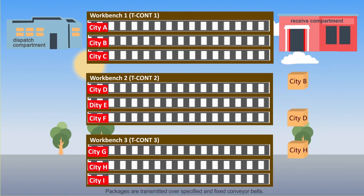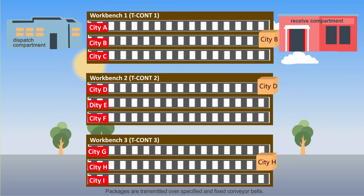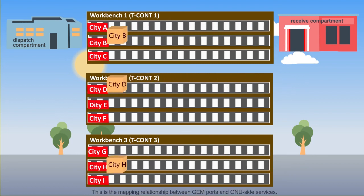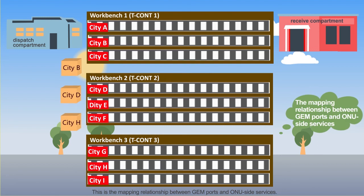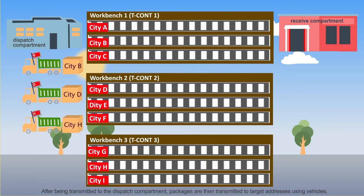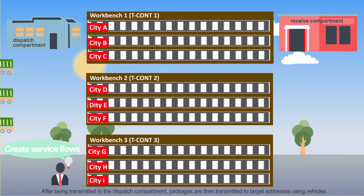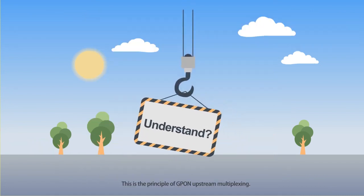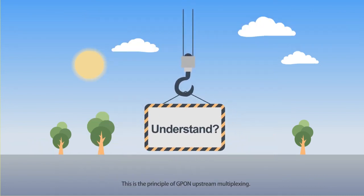Packages are transmitted over specified and fixed conveyor belts. This is the mapping relationship between GenePorts and ONU site services. After being transmitted to the dispatched compartment, packages are then transmitted to target addresses using vehicles. This is the principle of GenePort upstream multiplexing.